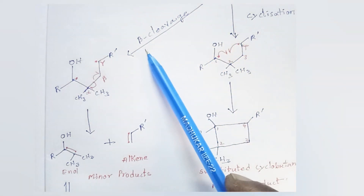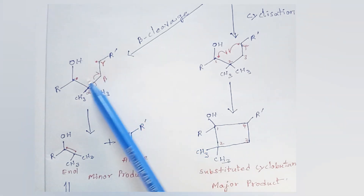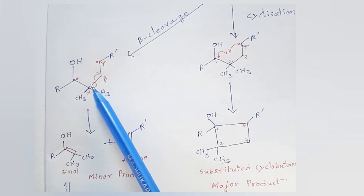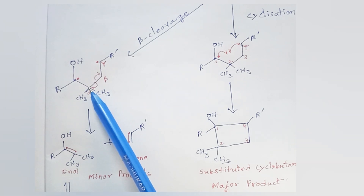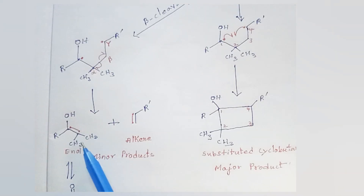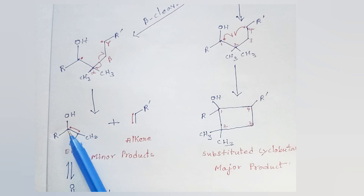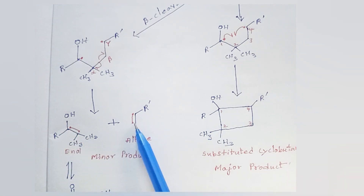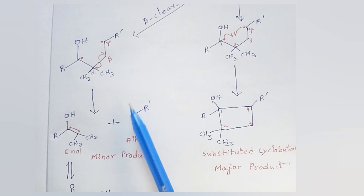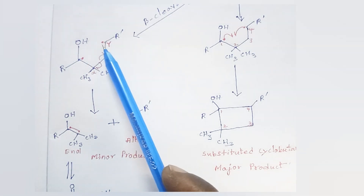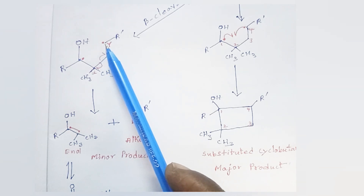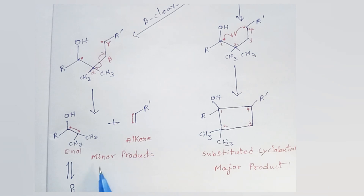At the same time, beta cleavage also occurs in this 1,4-biradical. The beta bond between the alpha carbon and beta carbon undergoes homolytic cleavage, forming one radical on the alpha carbon and one radical on the beta carbon. As a result, we get an enol and an alkene. These are the minor products.